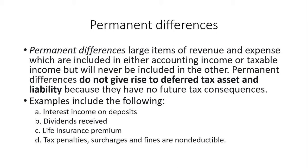Another example is life insurance premium. This is an expense — money paid by the entity for premium or insurance expenses. It will be considered a permanent difference if the entity is the beneficiary of the life insurance. It is deductible as an expense under accounting standards per the expense recognition principle, but for tax purposes it cannot be claimed as a deduction. Next, tax penalties, surcharges, and fines are non-deductible for tax purposes — they cannot be deducted as an expense. But for accounting purposes, since these are expenses, they can be recognized as such.